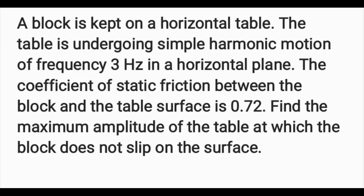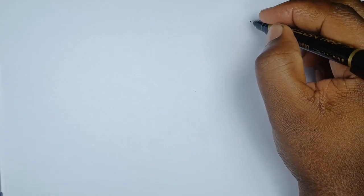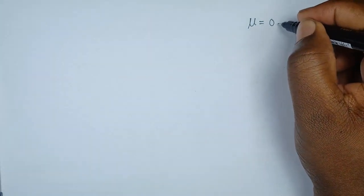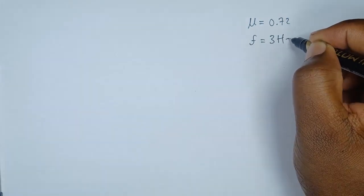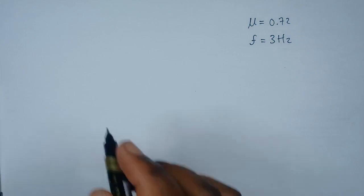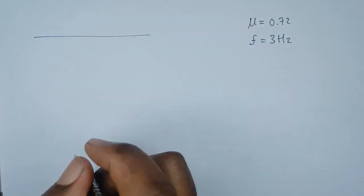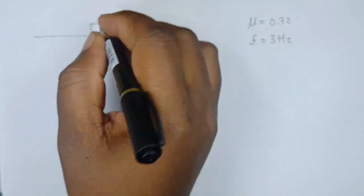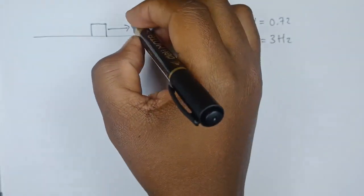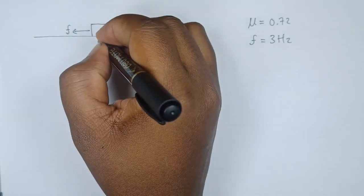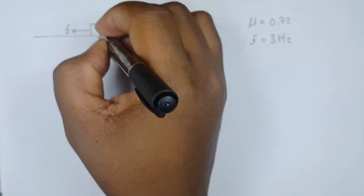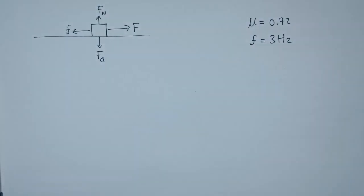Let's break down this question. We have a surface and on this surface we have an object. On this object there's a force acting in one direction, which we call F. There's another force opposing its motion — the friction force. There's another force going down — the gravitational force — and another force going up — the normal force. These are the four forces acting on this object.